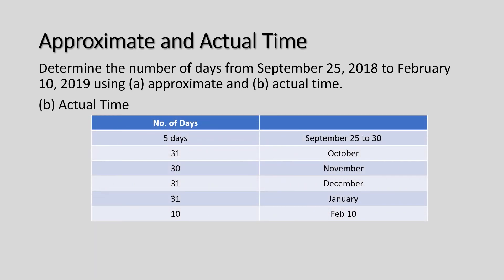For actual time: from September 25 to September 30 there are 5 remaining days. Using actual days — 31 for October, 30 for November, 31 for December, 31 for January, and 10 days for February — adding all these gives 138 actual days from September 25, 2018 to February 10, 2019.